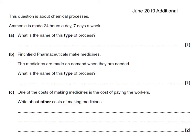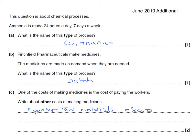Here's another exam question. 'Ammonia is made 24 hours a day, 7 days a week. What's the name of this type of process?' This is a continuous process. 'Finchfield Pharmaceuticals make medicines on demand when they're needed.' This is a batch process. 'One of the costs of making medicines is the cost of paying the workers — write about other costs.' For two marks we'd say: expensive raw materials, and research and development costs.